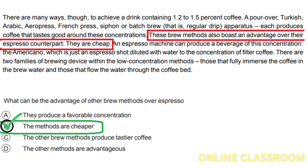These methods are less expensive to use or acquire. Option C, the other brew methods produce tastier coffee, is incorrect — the paragraph does not make any comparison regarding taste, only stating they achieve 1.2 to 1.5% coffee. Option D, the other methods are advantageous, is correct. The paragraph mentions these brew methods have an advantage over espresso because they are cheap, making them advantageous in terms of cost-effectiveness.